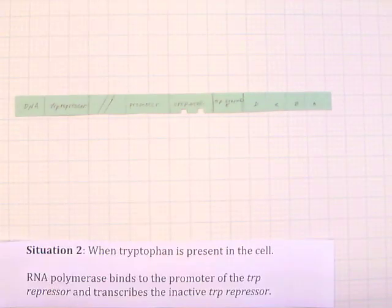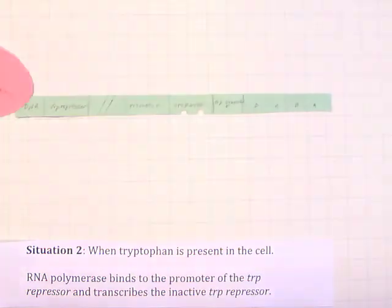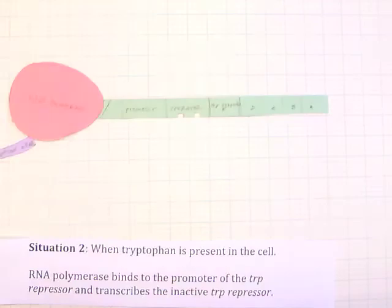Situation 2: When tryptophan is present in the cell. As in Situation 1, RNA polymerase will bind the promoter of the trp repressor and transcribe the inactive trp repressor. It will be translated into the trp repressor protein.